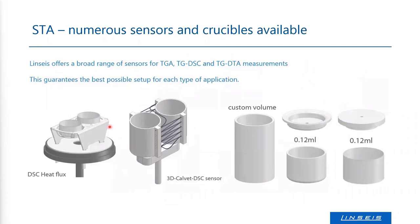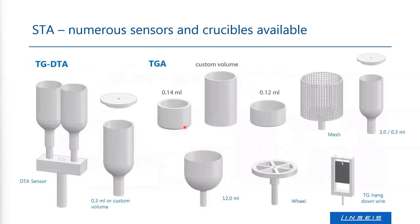Here are some sample holders for combined TG-DSC or TG-DTA measurements, depending on the sensitivity needed for the DSC signal. We have not only the classical heat flux type, but also the Cal-V type system using larger crucibles with multiple thermocouples and thermopiles which ensure higher sensitivity. For pure TGA measurements, we have large crucibles up to 12 millimeters or mesh-type sample holders.